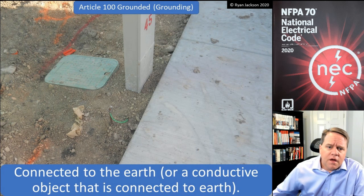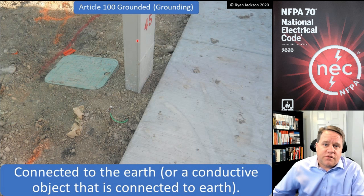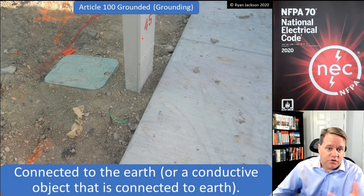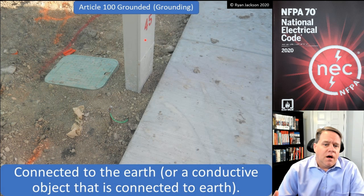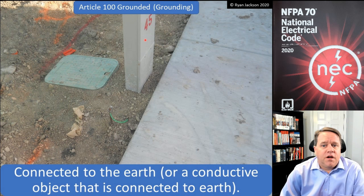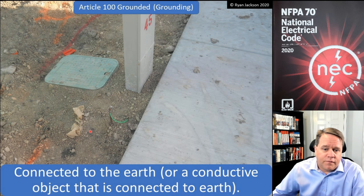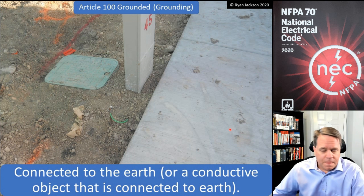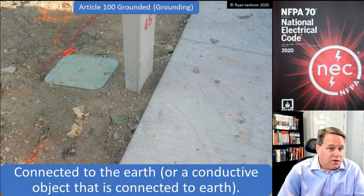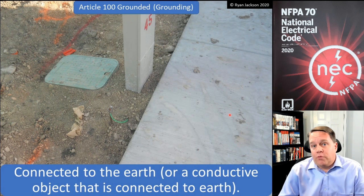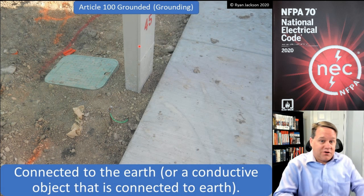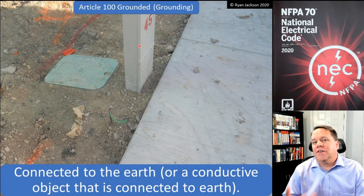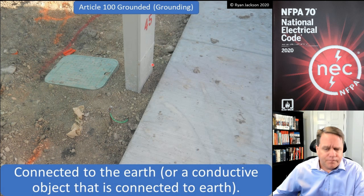Ever since 2008, these terms are so much better. Here's a temporary pedestal for a house being built. This is service equipment by definition — the utility goes straight into this enclosure, there's a meter and circuit breakers. Per 250.24(A), that equipment has to be connected to a grounding electrode and grounding electrode system, which we have here in the form of this ground rod. We connect the metal parts to the grounding electrode with a grounding electrode conductor — much more descriptive than just saying that metal thing has to be grounded.